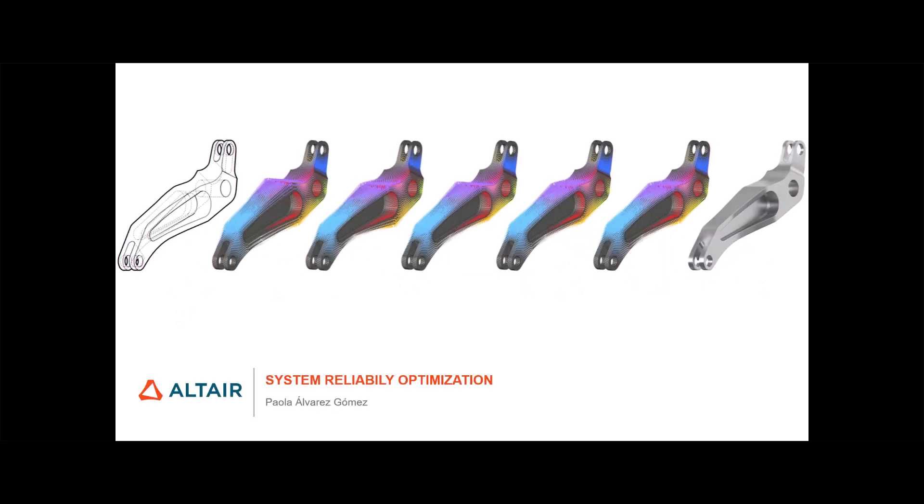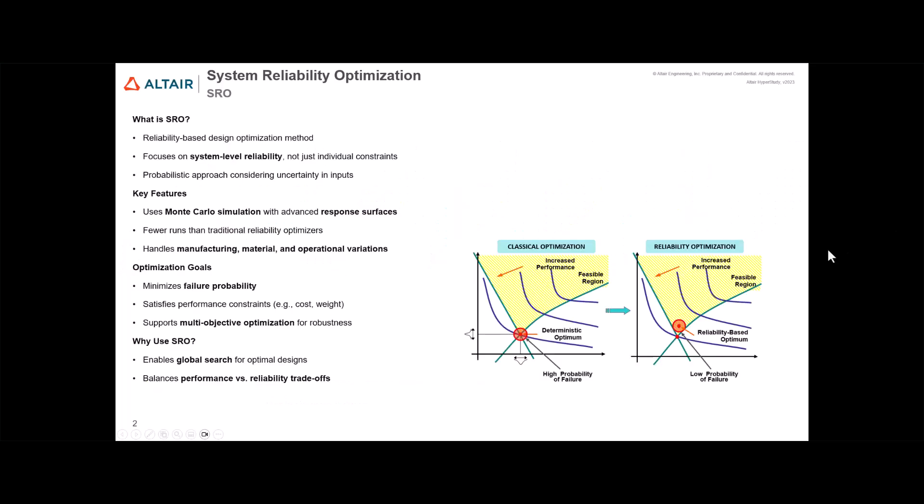Hello everyone. In this video we're going to talk about system reliability optimization. This is a highly efficient reliability-based design optimization method. This method allows reliability constraints to be applied to not just the individual failure constraints but to the overall system reliability.